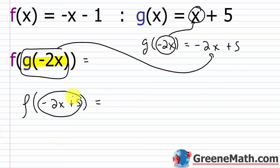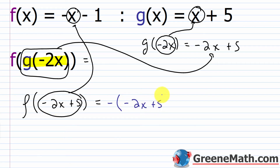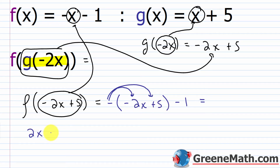Now I'm plugging negative 2x plus 5 in for x in f of x. Be careful of that negative out in front — you want to account for that. So I'm going to have negative times the quantity negative 2x plus 5, then minus 1. Distributing that negative: negative times negative 2x gives 2x, and negative times positive 5 gives minus 5, then minus 1. So 2x, and negative 5 minus 1 is negative 6. This ends up being 2x minus 6. So f of g of negative 2x equals 2x minus 6.